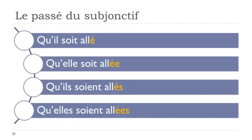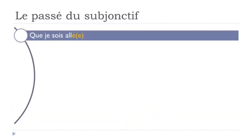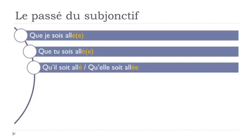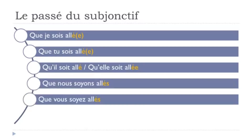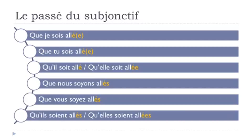Here is the full conjugation of aller at the passé du subjonctif: que je sois allé, que tu sois allé, qu'il soit allé, qu'elle soit allée, que nous soyons allés, que vous soyez allés, qu'ils soient allés, qu'elles soient allées. Remember: no liaison when you have these pronoun forms. Here it is again with liaison: que je sois allé, que tu sois allé, qu'il soit allé, qu'elle soit allée, que nous soyons allés, que vous soyez allés, qu'ils soient allés, qu'elles soient allées.